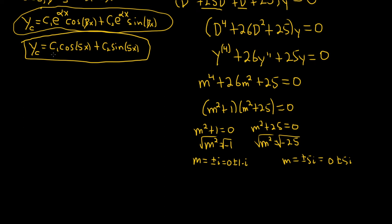So y equals — taking the first pair with alpha = 0, beta = 1: c1 cos(x) + c2 sin(x). Then from beta = 5: plus c3 cos(5x) plus c4 sin(5x).